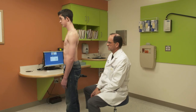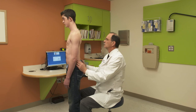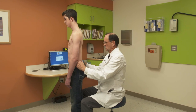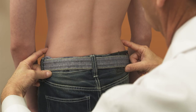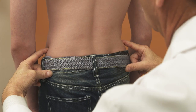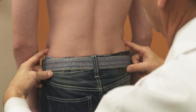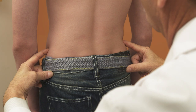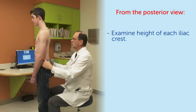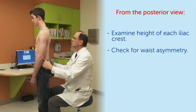Then examine the patient from a posterior position. Start by examining the height of each iliac crest to evaluate for leg length discrepancy. Proceed to move cephalid to view for waist asymmetry.